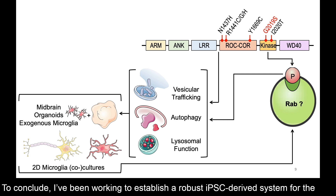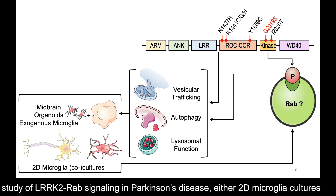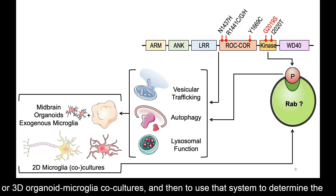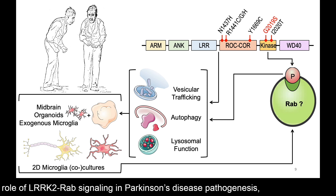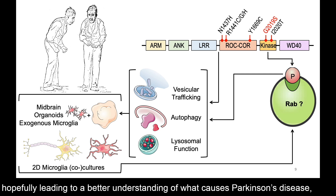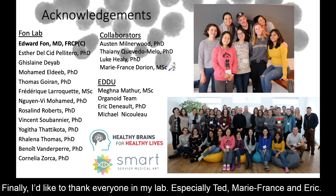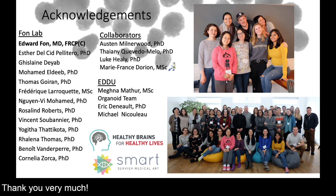To conclude, I've been working to establish a robust iPSC-derived system for the study of LRRK2-RAB signaling in Parkinson's disease, either 2D microglial cultures or 3D organoid microglial co-cultures, and then to use that system to determine the role of LRRK2-RAB signaling in Parkinson's disease pathogenesis, hopefully leading to a better understanding of what causes Parkinson's disease and how we can treat it. I'd just like to thank everyone in my lab, especially Ted, Marie-France, and Eric. Thank you very much.